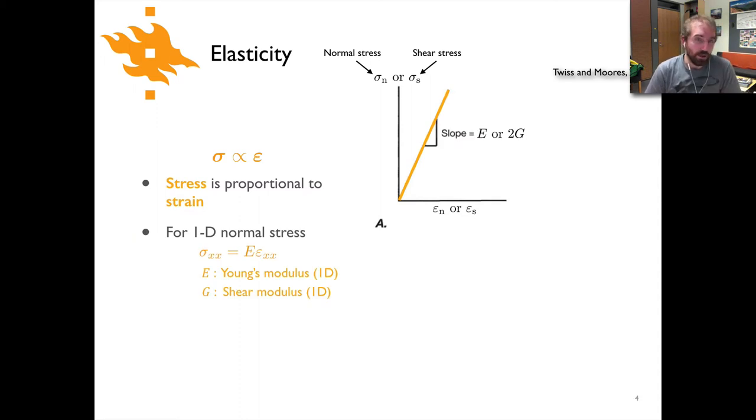So for a 1D normal stress, for instance sigma xx, we can say sigma xx is equal to E, some value E that we'll talk about in just a second, times epsilon xx. And that value of E would be for normal stress something called Young's modulus in 1D, and for a shear stress it would be the shear modulus G. The slope of this line essentially is dictated by the value of Young's modulus or the shear modulus.